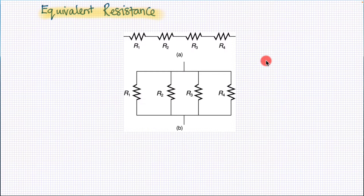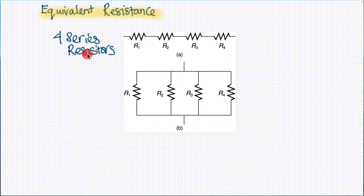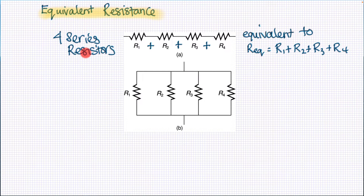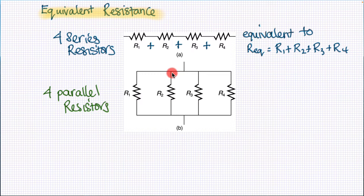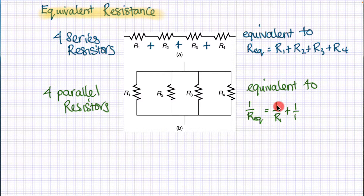The first requirement when analyzing a series or parallel circuit is to establish the equivalent resistance when many resistors are connected together, either in series or in parallel. If we have four resistors connected in series, the equivalent resistance is simply the sum of all the resistors — we just add them up, which is fairly straightforward. However, when parallel resistors are wired together, because of the current dividing at junction points, we can't simply add the resistors together.